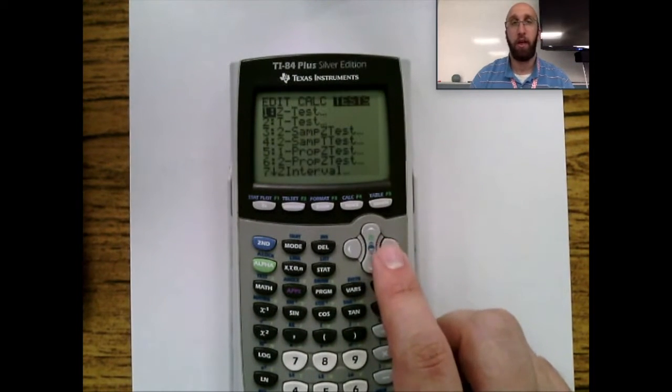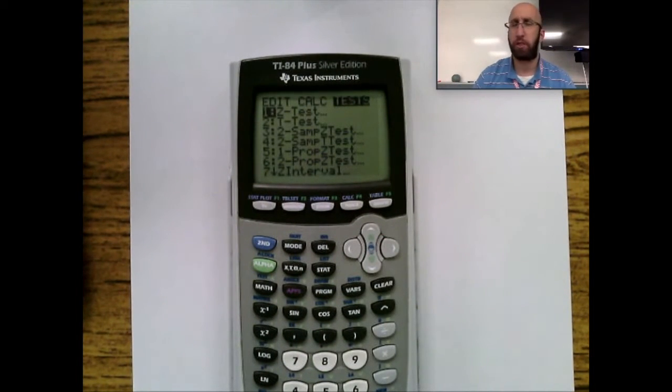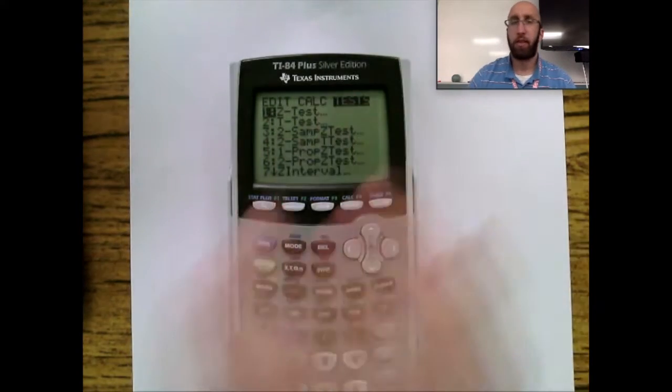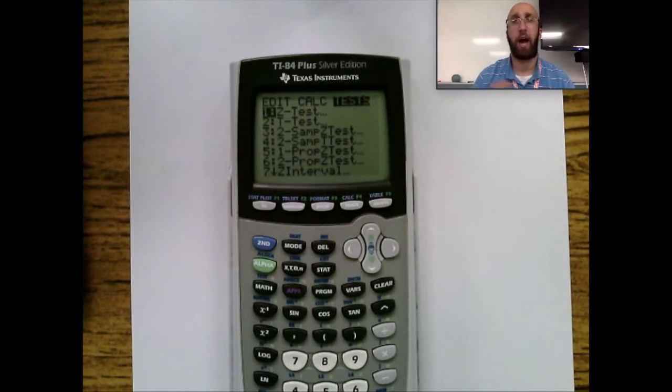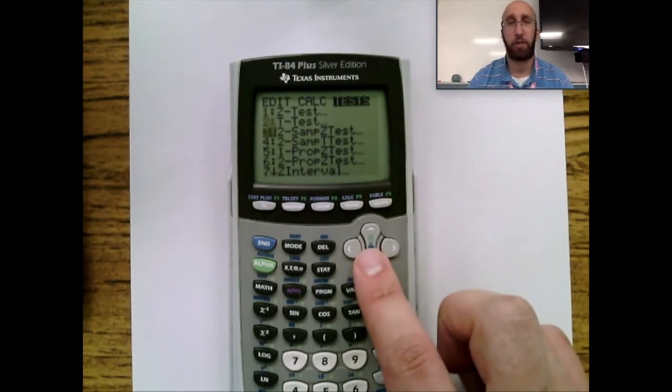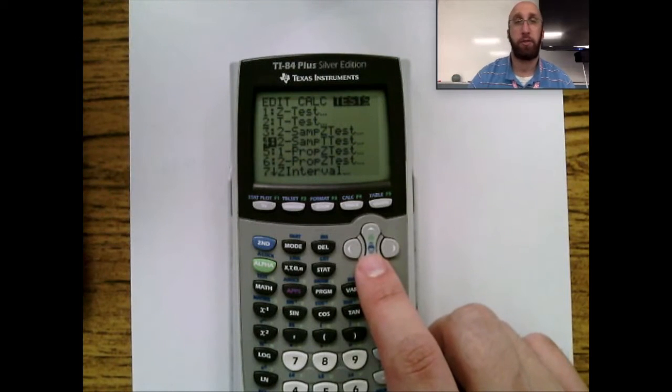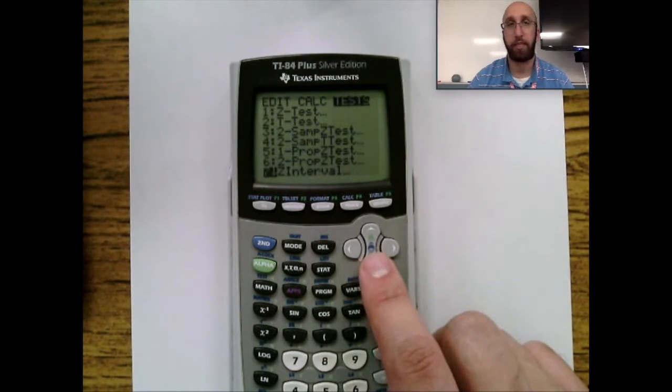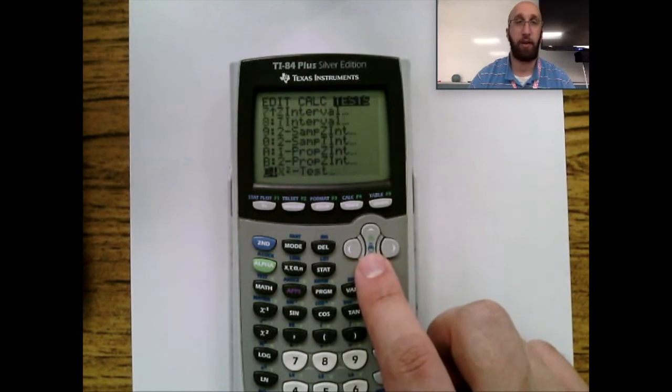And then Test is where you probably are going to use the most here. This is the collection of all of our different hypothesis tests and all of our different confidence intervals. So we got z-test, t-test, two-sample z-test, two-sample t-test, one-prop z-test. Everything's in there.